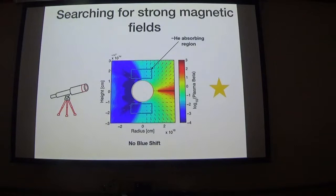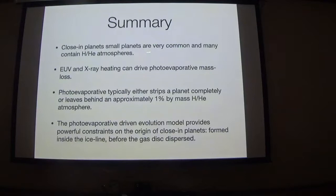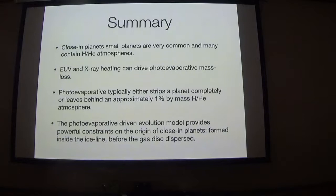There is a lot of interesting work to be done to test this model, and if it's true, the conclusions about planet formation are quite profound. In summary: close-in planets are small and common; many contain hydrogen-helium atmospheres and many more had them when they were born, subsequently losing them to EUV and X-ray driven photoevaporative mass loss. Photoevaporation drives a bimodal evolution — either completely stripping a planet or leaving behind approximately 1% by mass of hydrogen-helium (the 1% is not magic; the physical point is doubling the planet's radius). The photoevaporation model provides powerful constraints on close-in planet formation, but the model must be trusted and tested.